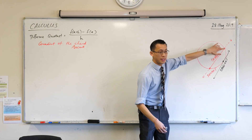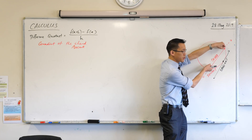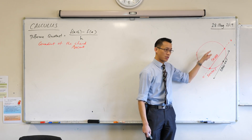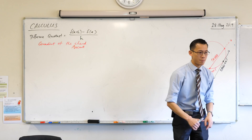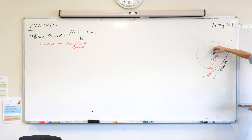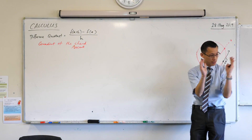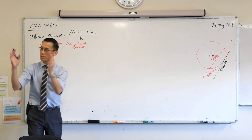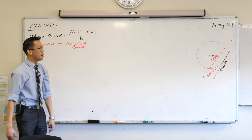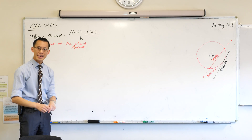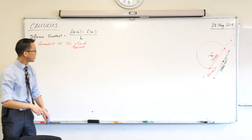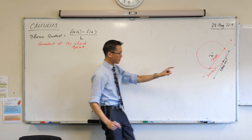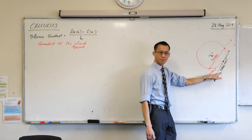We're bringing them closer and closer and closer until they sit on top of each other. Now, the length of this chord — have a look at your diagram — the length of that chord is kind of like h. Remember that? It's like that little distance across the bottom, a run. And we tried to make that run smaller — from two to one to a half — but what if we could make that run exactly zero? Then you would not get the gradient of the chord; you would get the gradient of the tangent.